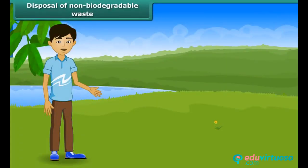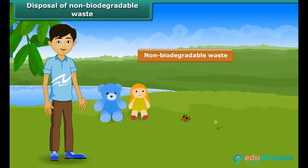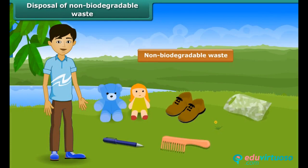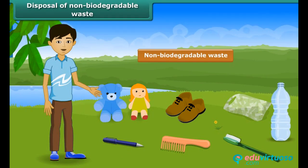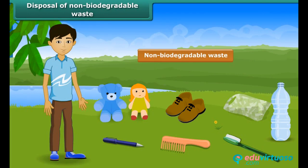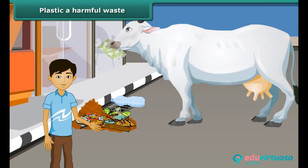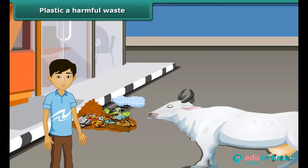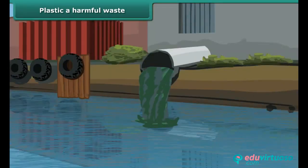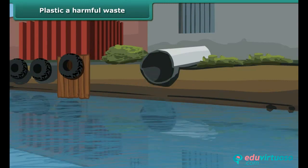Now we will look at disposal of non-biodegradable waste. Toys, shoes, bags, pens, combs, toothbrushes and bottles are made up of plastics and glass. Plastic is a non-biodegradable material — it does not break down into simpler substances. Also, the recycling of all types of plastics is not possible; only a few types of plastics can be recycled. The burning of all types of plastics produces harmful gases. Sometimes animals eat plastic bags, which causes the death of those animals. The plastic bags we throw on roads go down into sewers and choke them, allowing water to run out of the sewers and causing many difficulties to people.